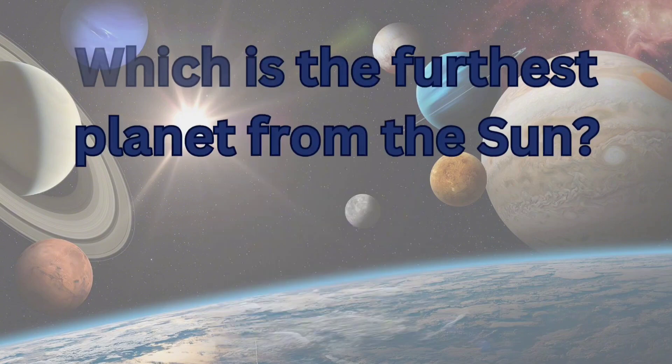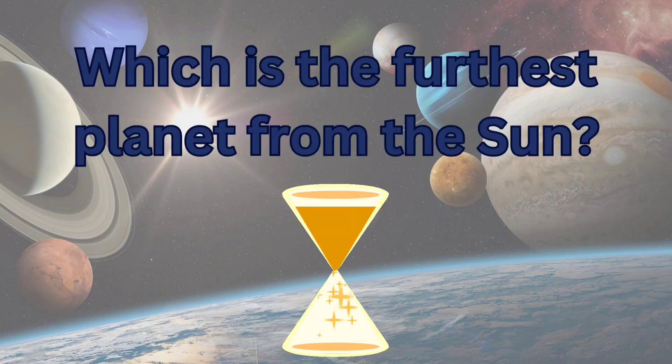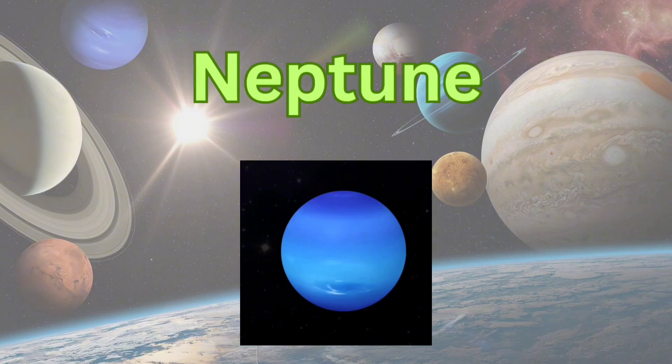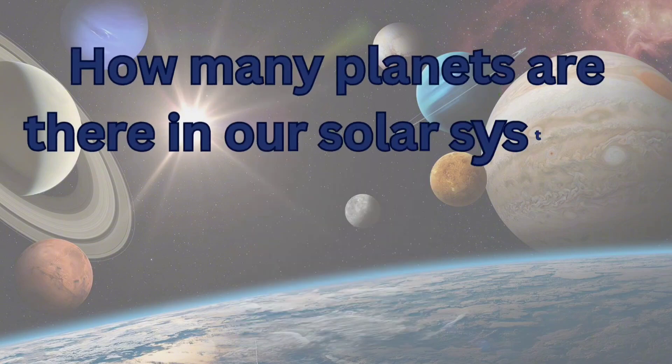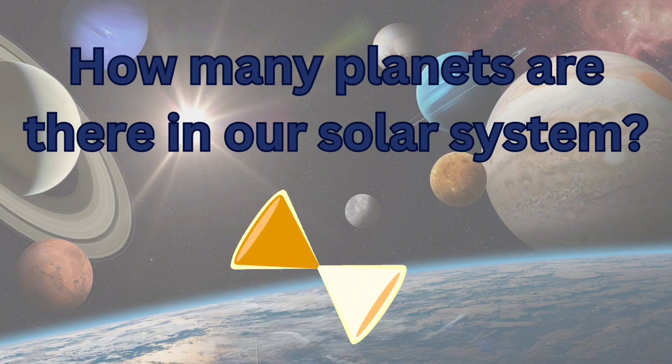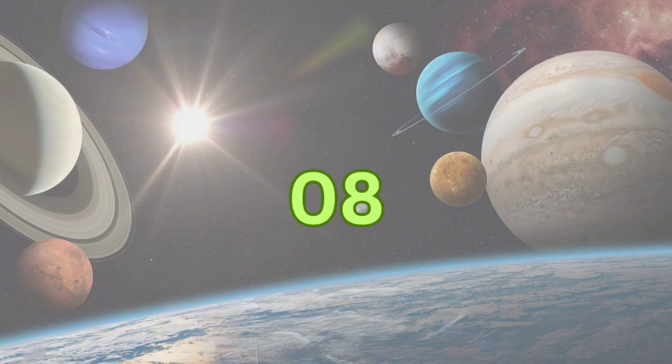Which is the furthest planet from the sun? Neptune. How many planets are there in our solar system? Eight.